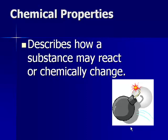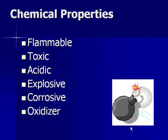Chemical properties describe how a substance may react or chemically change. Examples of chemical properties would be flammable, toxic, acidic, explosive, corrosive, and oxidizer. There are many more of these — these are just a few examples.